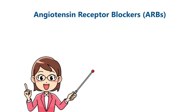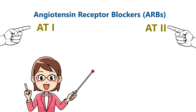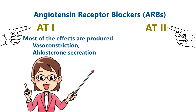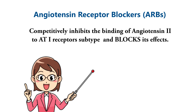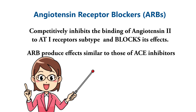Next, Angiotensin Receptor Blockers (ARBs). There are two angiotensin receptors: AT1 and AT2. AT1 mediates vasoconstriction and aldosterone secretion. ARBs competitively inhibit the binding of Angiotensin 2 to the AT1 receptor, thereby preventing Angiotensin 2's effects. ARBs produce effects similar to those of ACE inhibitors.